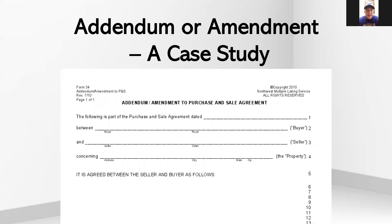Yes, I do. So first of all, I wanted to address the difference between those two words and what they mean, because in legalese there's a big difference. On our Form 34, as you can see posted here, the title of this form at the top is addendum slash amendment. But they don't mean the same thing. An addendum is something that is used at the time of mutuality that the buyer and seller are agreeing to as being part of the original agreement. So if we add a Form 34 at that time, it's actually an addendum to the agreement.